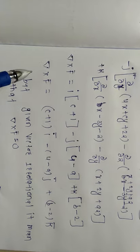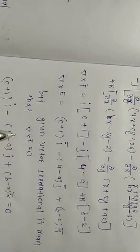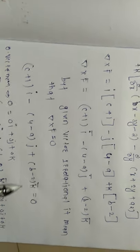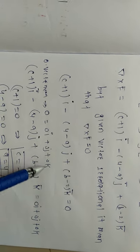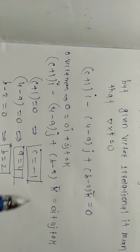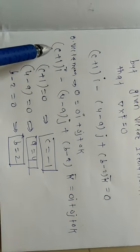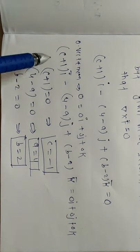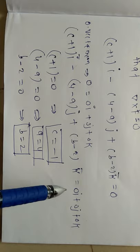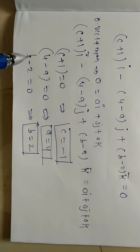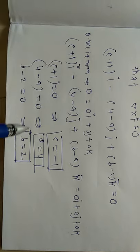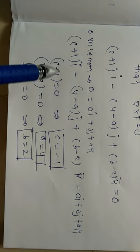But the given function is irrotational, meaning del cross f-bar equals zero vector, i.e., 0·i + 0·j + 0·k. Equating coefficients: coefficient of i gives c + 1 = 0, so c = −1. Coefficient of j gives 4 − a = 0, so a = 4. Coefficient of k gives b − 2 = 0, so b = 2. Therefore a = 4, b = 2, c = −1, which gives del cross f-bar = 0.